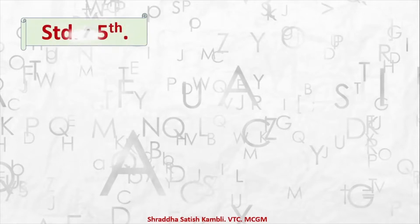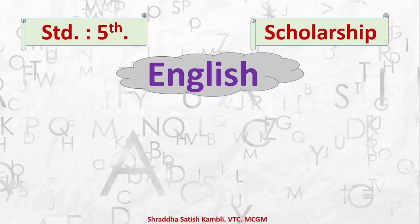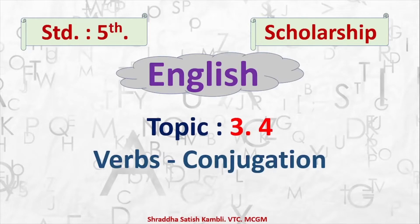Today we will be doing a new lesson in Standard 5th. The subject is scholarship and we will be doing scholarship for English. And what is the lesson that we are going to do? We are going to start with lesson number 3.4: Verbs Conjugation. There are two words here — verbs and conjugation. Let us think a little bit about what we have learnt in the previous lessons. We have talked about adjectives, pronouns, and parts of speech in general.